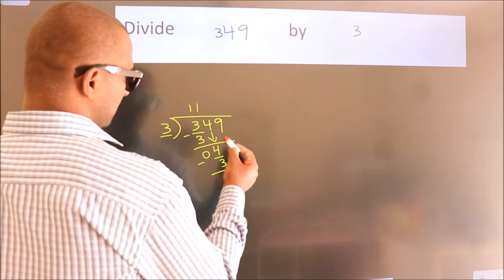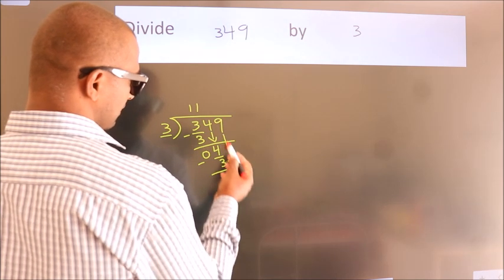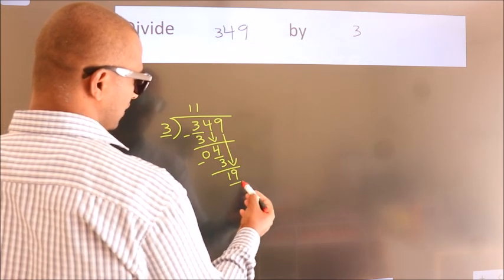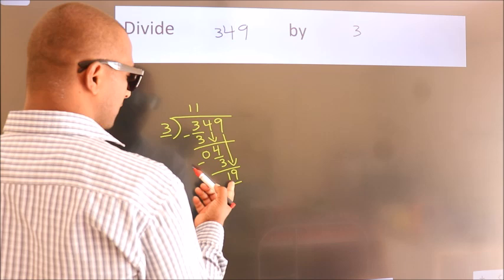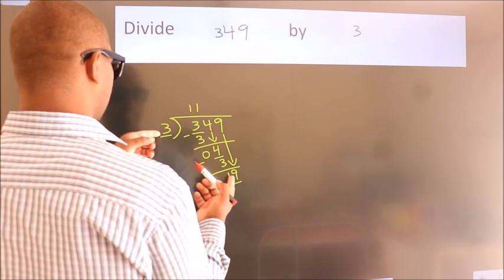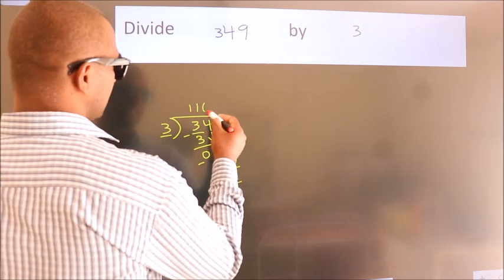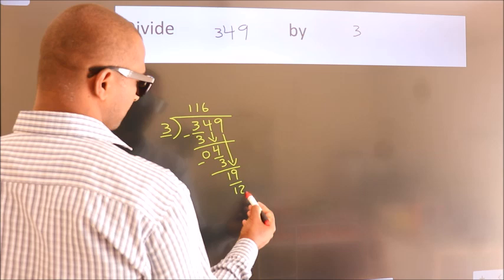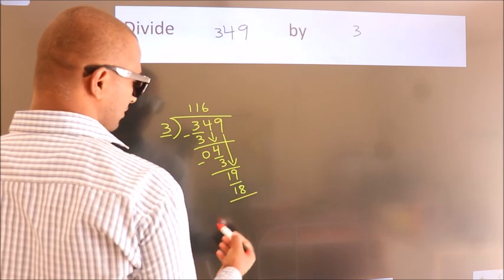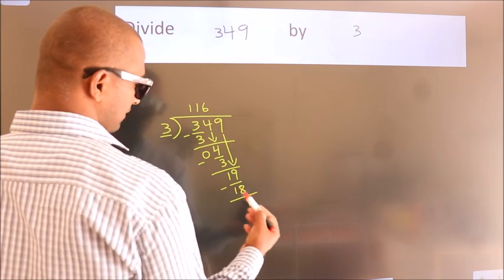After this, bring down the beside number. So 9 down, so 19. A number close to 19 in the 3 table is 3 times 6 is 18. Now, we subtract, we get 1.